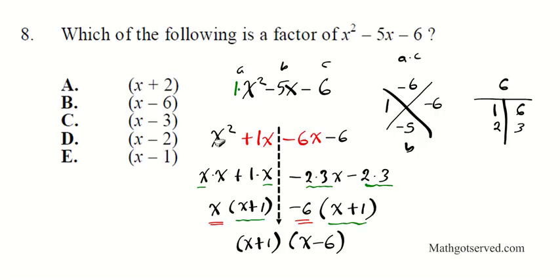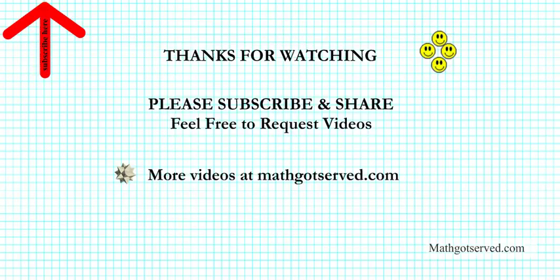So the factored form is (x plus 1)(x minus 6). Looking at the options, x minus 6 appears, so the answer to number 8 is B. Thanks so much for watching this video. Please subscribe so you can get future updates, and you can share this video with your friends via Facebook or Twitter. You can also request videos.